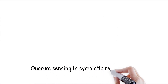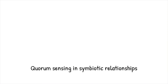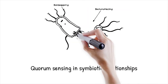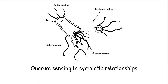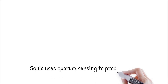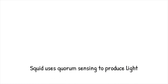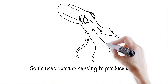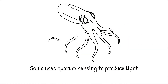Quorum sensing plays a vital role in symbiotic relationships between bacteria and their hosts. In mutualistic interactions, bacteria use quorum sensing to regulate beneficial activities such as nutrient exchange, bioluminescence, or protection against pathogens. For example, in the squid-bacterium symbiosis, Vibrio fischeri uses quorum sensing to produce light, helping the squid evade predators. In return, the squid provides a nutrient-rich environment for the bacteria.